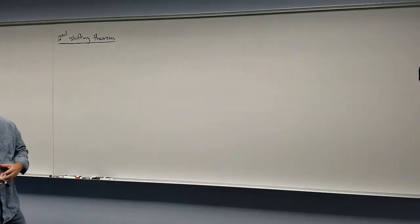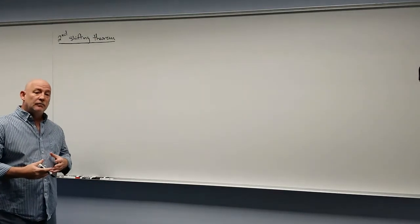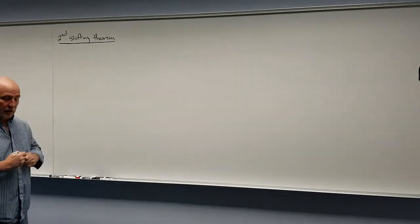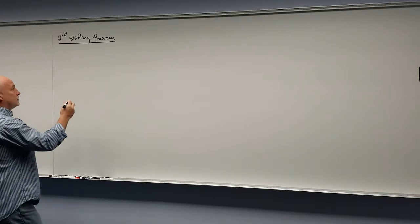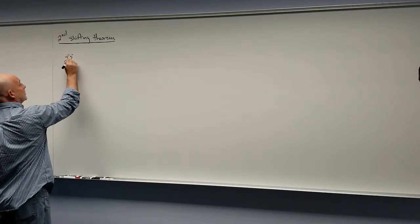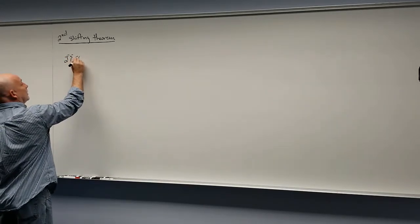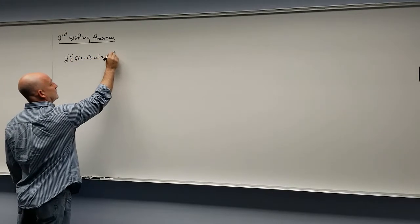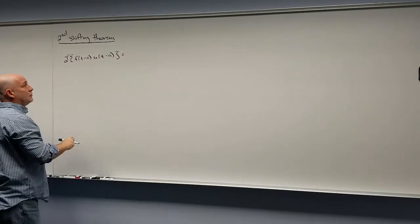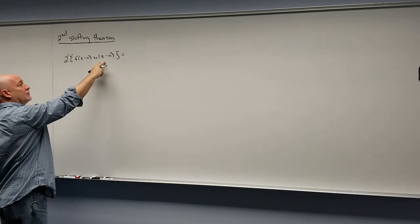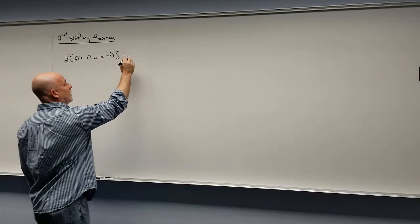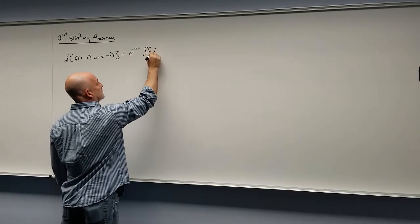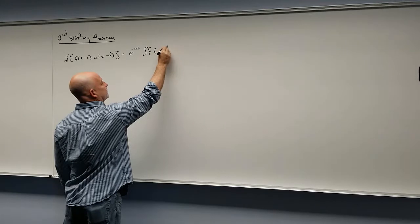We're looking at the second shifting theorem now. The second shifting theorem deals with the unit step function that we saw a couple of lectures ago. It says if you're doing the Laplace transform of some function times a step function, then multiplying by the step function in the t-world ends up multiplying by an exponential in the s-world, and then you just do the Laplace transform of f of t.